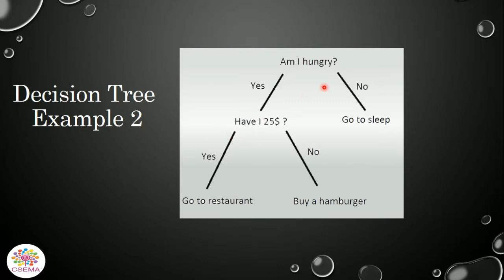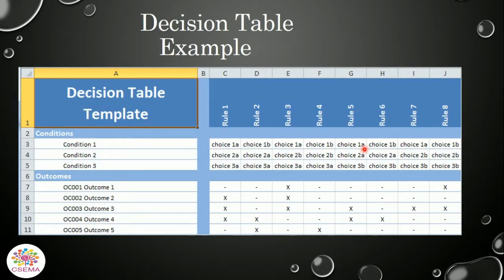Example 2 shows another way to represent the hierarchical decision tree: 'Am I hungry?' If yes, then a condition is checked; if no, then a corresponding action is performed. This is another way to represent the decision table — all the conditions are written here, and the rules are written here; on the basis of the conditions, all the rules are to be performed.